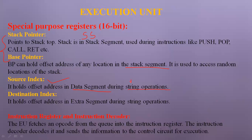A string is a collection of data — for example, 'hello' is not a single byte but a collection of characters. During string operations, the source index holds offset addresses in the data segment. The destination index holds the offset address of the extra segment during string operations. The instruction register and instruction decoder fetch the opcode from the queue, decode it, and send the information to the control circuit for execution.